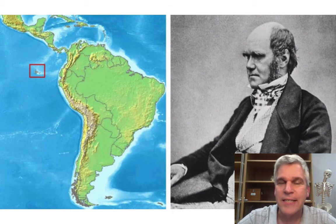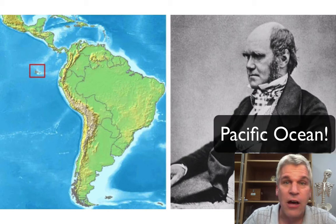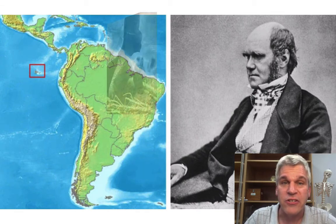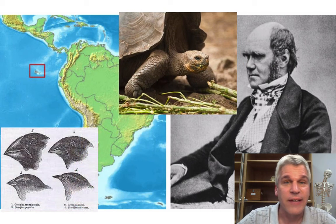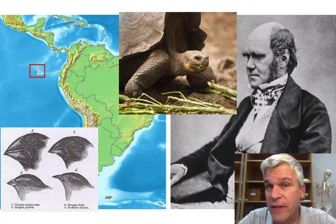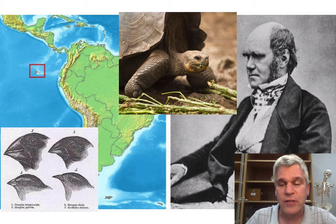which is a set of islands off the coast of South America in the Pacific, along the equator. Darwin made observations about the tortoises on the island and the different types of finches on the island, that all helped him come to his conclusion about natural selection.